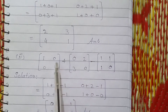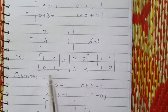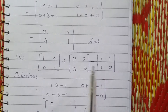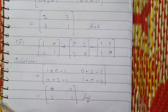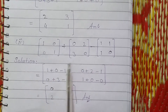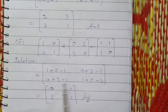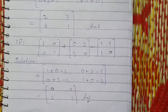1 plus 0 is 1. So that is the answer for the first sub-question. For the second sub-question: 1 plus 0 minus 1; 0 plus 2 minus 1; 0 plus 3 minus 1; 1 plus 0 minus 0. Here 1 minus 1 cancels out and we get 0; 2 minus 1 is 1; 3 minus 1 is 2; and 1. This is the answer.